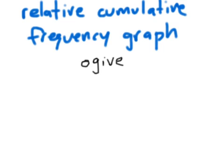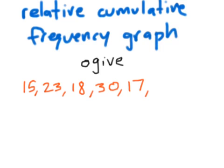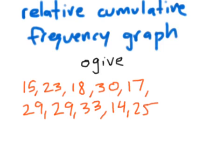It's the same data as last time, which is the bunch of tomato plants. You have 10 tomato plants and you count the number of tomatoes on each plant. The tomatoes go 15, 23, 18, obviously 15 tomatoes on one plant, then 30, 17, 29, 29, 33, 14, 25. So we're going to make an ogive using this data on the next page. It's a little bit complicated, so I'm going to go through the steps in some detail.